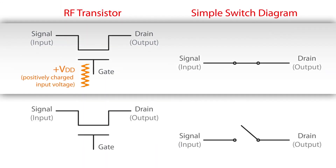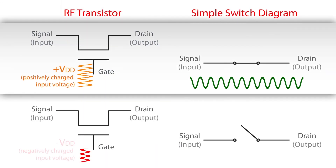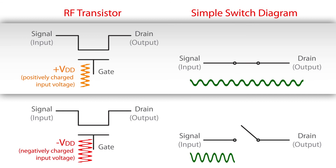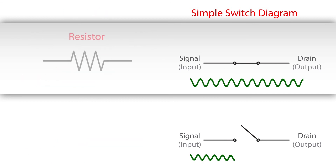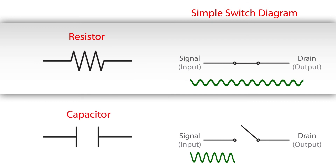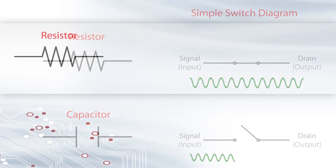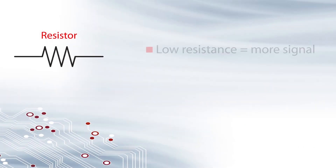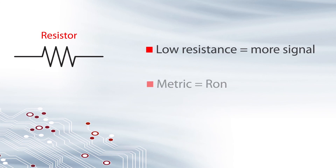A positive voltage turns the switch on and a negative voltage turns it off. In design schematics, the on state is represented as a resistor and the off state as a capacitor. A low resistance allows more of the signal to travel from one port to another when the switch is on. This metric is called R on.